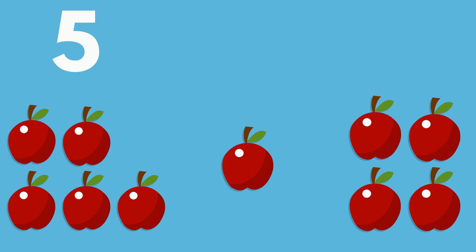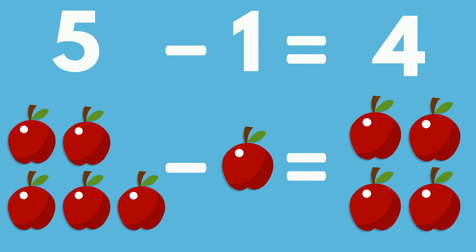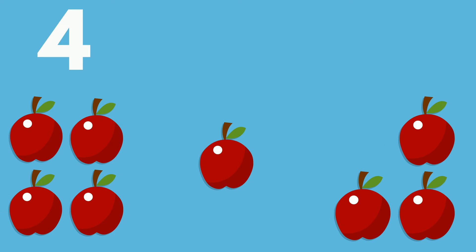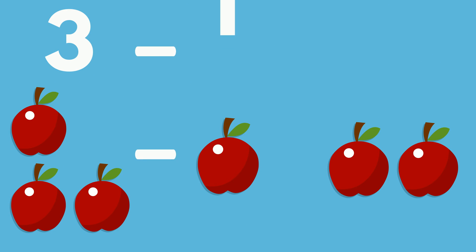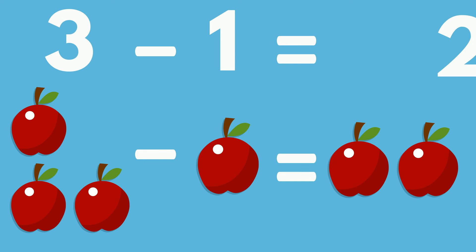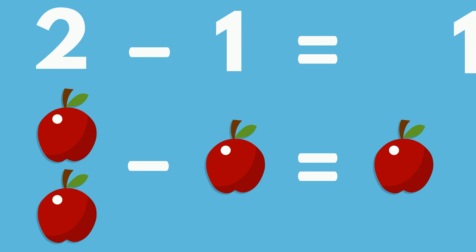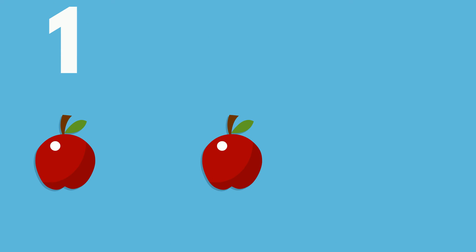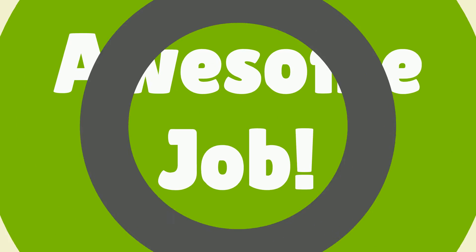5 apples minus 1 apple equals 4 apples. 4 apples minus 1 apple equals 3 apples. 3 apples minus 1 apple equals 2 apples. 2 apples minus 1 apple equals 1 apple. 1 apple minus 1 apple equals 0 apples.